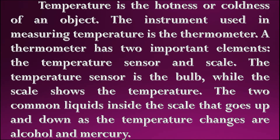Temperature is the hotness or coldness of an object. The instrument used in measuring temperature is the thermometer. A thermometer has two important elements: the temperature sensor and scale. The temperature sensor is the bulb, while the scale shows the temperature. The two common liquids inside the scale that go up and down as the temperature changes are alcohol and mercury.